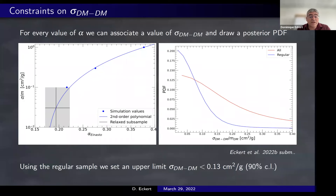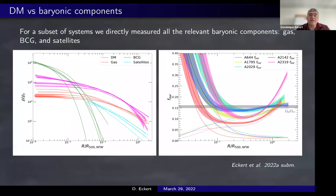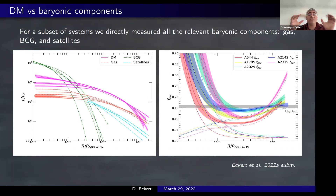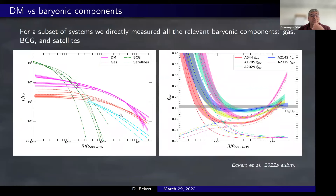For a number of systems we also have measurements of the stellar components — the brightest cluster galaxy and satellite galaxies — which allow us to decompose the gravitational field into all its components: the brightest cluster galaxy in green, dark matter in purple, gas in red, and satellite galaxies in cyan. The right-hand side shows the total baryon fraction as a function of radius.